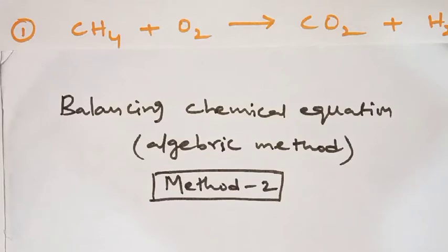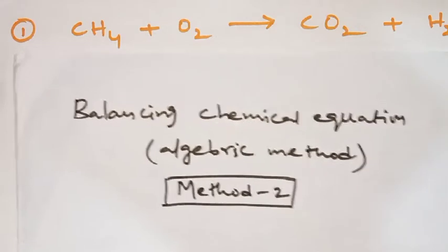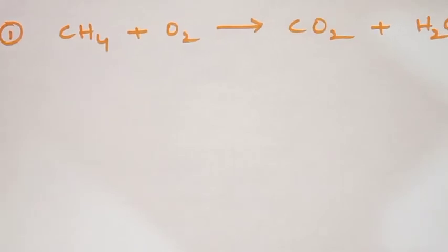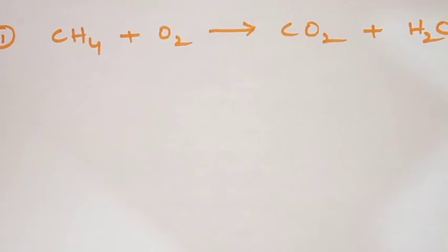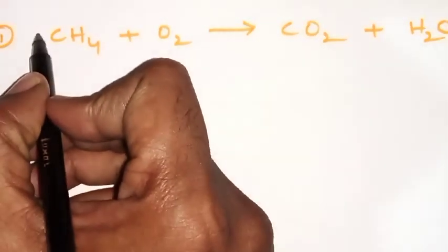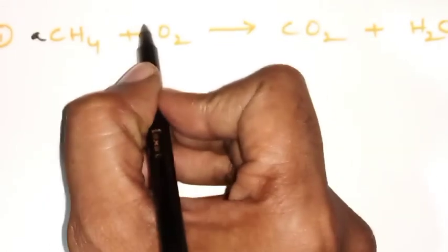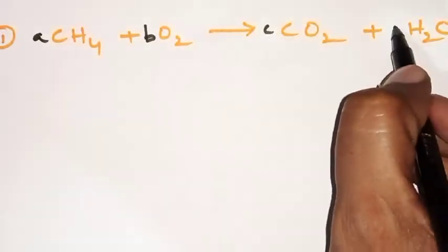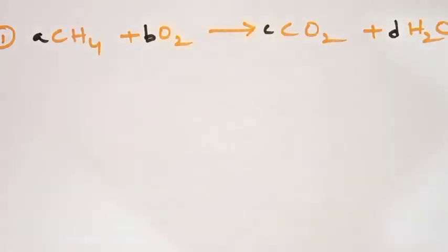Observe here: CH₄ + O₂ gives CO₂ + H₂O. This is the equation. How many moles of CH₄, how many moles of O₂ — we don't know. Similarly, how many moles of CO₂ and H₂O — we don't know. So let us consider 'a' moles of CH₄, 'b' moles of O₂, 'c' moles of CO₂, and 'd' moles of H₂O.